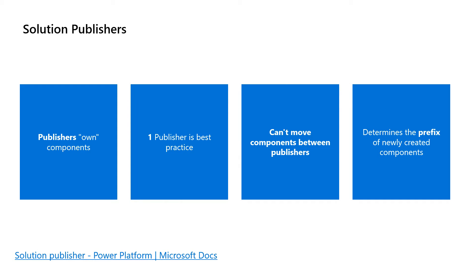Every app and other solution components such as tables you create, or any customizations you make, is part of a solution. Because every solution has a publisher, you should always create your own publisher rather than using the default. You specify the publisher when you first create the solution. The publisher of a solution is where a component is created — considered the owner of that component. The owner of a component controls what changes other publishers of solutions including that component are allowed to make or restricted from making. It is possible to move the ownership of a component from one solution to another within the same publisher, but not across publishers.